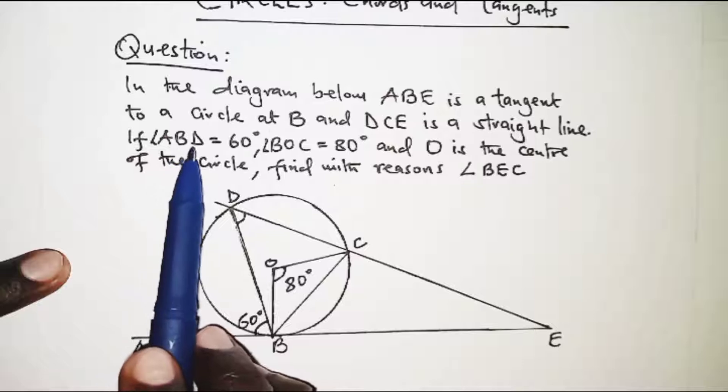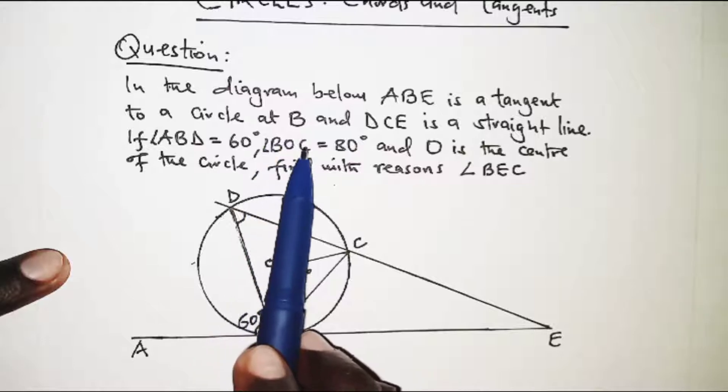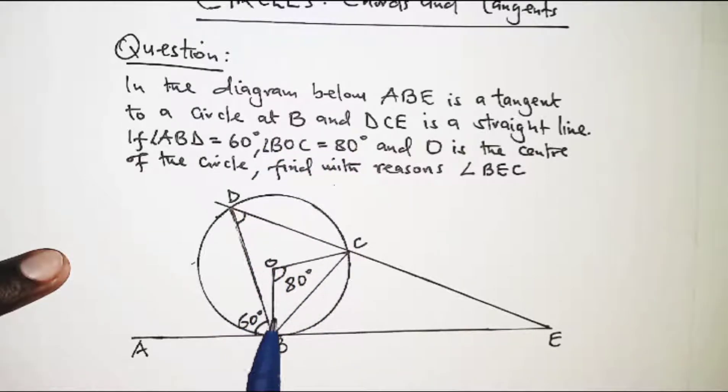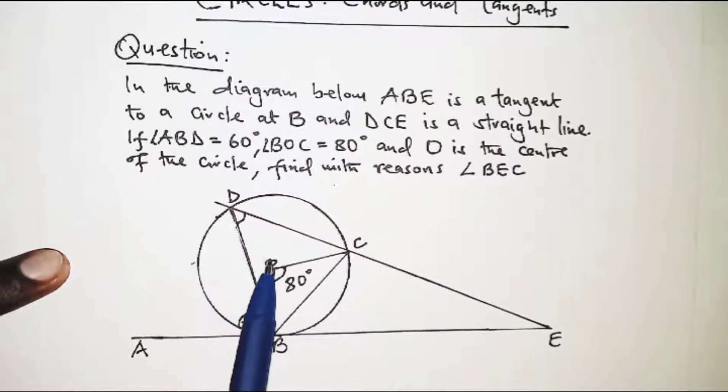If angle ABD is 60, so we have ABD right here, 60. Angle BOC is 80, so this angle is 80, and O is the center of the circle.